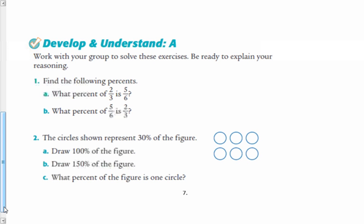This first problem says find the following percent. So I am going to use a proportion to do that. It says what percent of two thirds is five-sixths? I am going to draw a diagram to help me with this. I am going to split it into thirds. So two thirds would be right there, those two parts. And then we want to know what percent of two thirds is five-sixths. So I am going to split each of those in half so that I now have six parts.